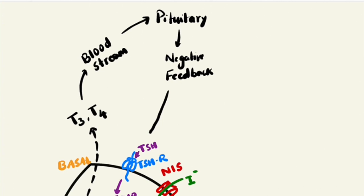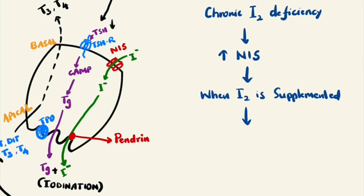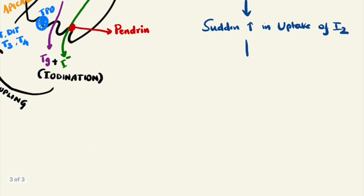When there is chronic iodine deficiency — for example in endemic goiter where there is endemicity of iodine deficiency, or sporadically — what happens is there is increased sodium iodide symporter brought onto the surface of the follicular cell, because the thyroid follicle is very hungry for iodine. There are a lot of sodium iodide symporters coming and sitting on the basolateral side waiting for iodine. When you give iodine in this scenario, the sodium iodide symporter takes up iodine rapidly, resulting in increased formation of T3 and T4, causing hyperthyroidism. This is known as Jod-Basedow Phenomenon.